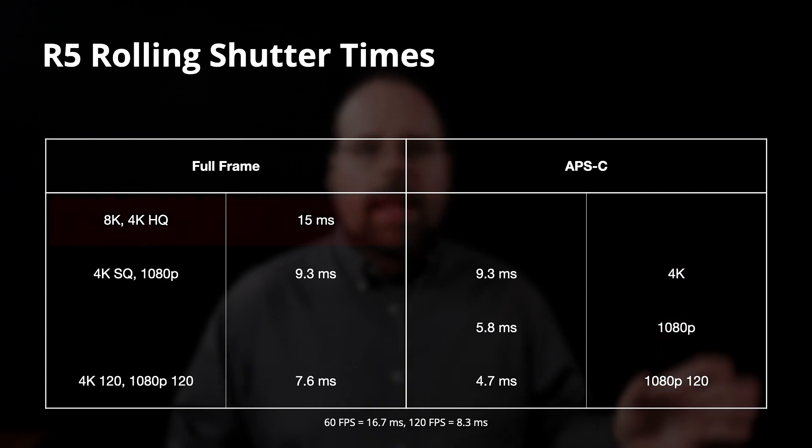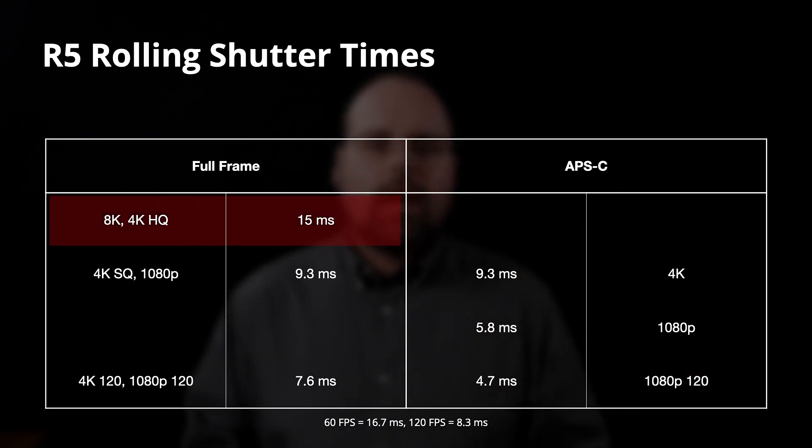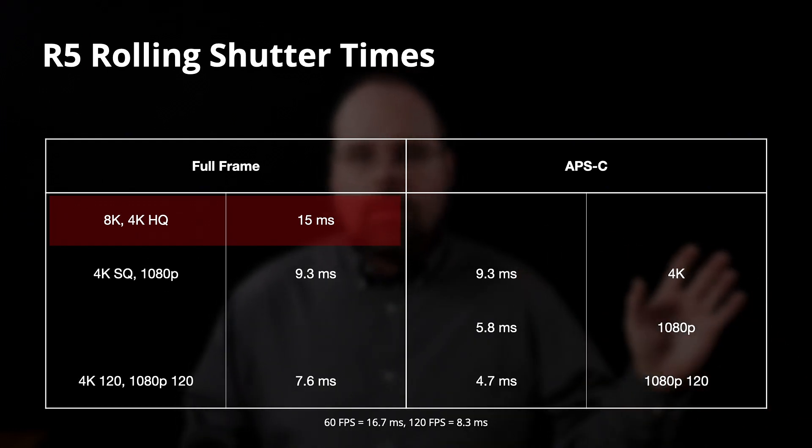Starting with shooting full frame in 8K or 4K high quality — the rolling shutter time is 15 milliseconds. 4K high quality mode is 8K downsampled to a 4K output, as Canon has confirmed. So from the camera's perspective, it is reading out 8K in either mode, and it makes sense that we see the same rolling shutter time for a downsampled image.